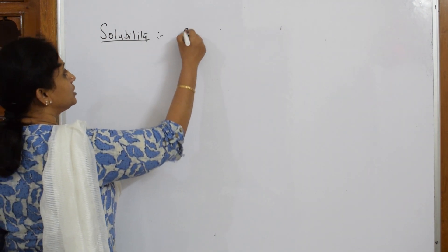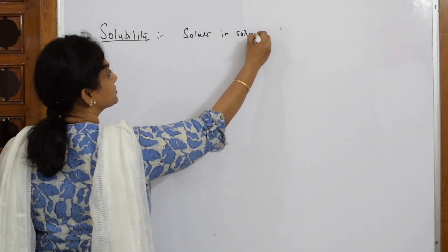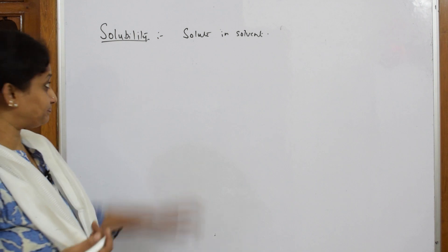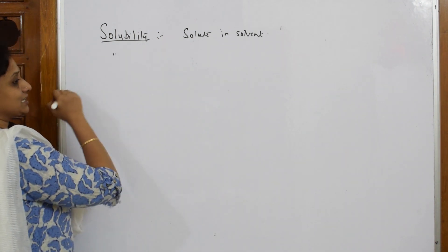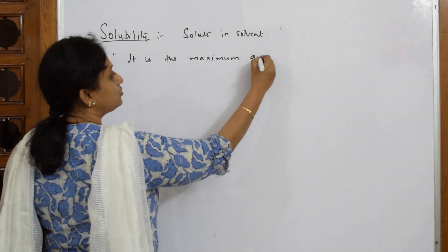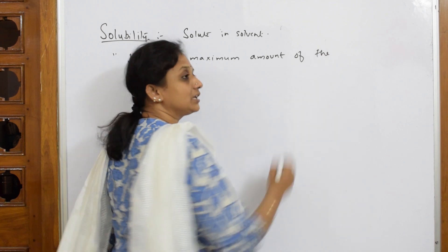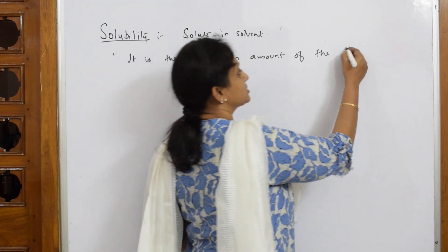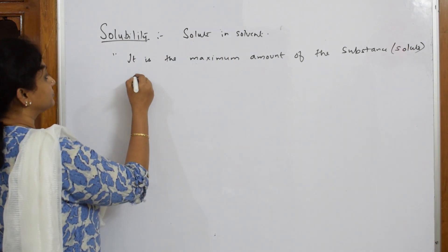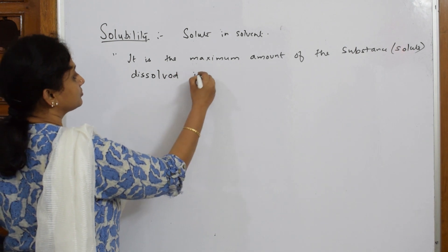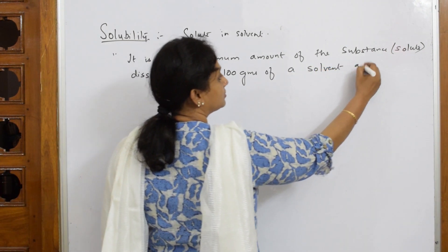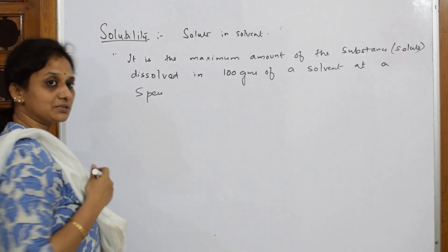I am going to define solubility of a solute in a solvent. Solubility is the maximum amount of a substance — that is, the solute — dissolved in 100 grams of a solvent at a specified temperature and pressure.